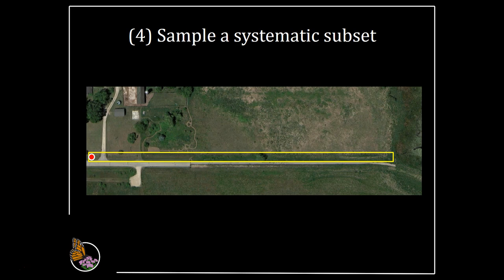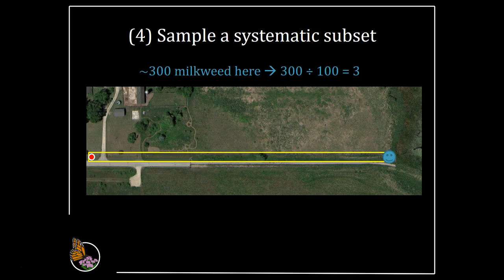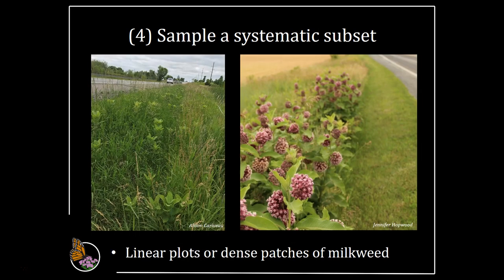The final option is to sample a systematic subset by monitoring a certain proportion of plants. Estimate the total number of milkweed plants at the site, then divide your estimate by 100. Examine one out of the resulting number as you walk through the plot. For example, if a site has about 300 milkweed plants, divide 300 by 100 to get 3 — you'd examine every third plant. This number may change through the season if milkweed amounts vary. The systematic subset method is useful on linear sites such as roadsides or agricultural edges with lots of milkweed, or other plots with patchy milkweed.